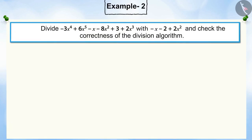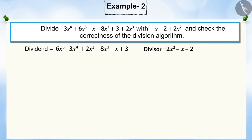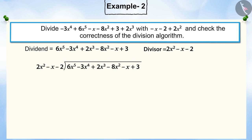Let us see another example. In this question, we will divide the first polynomial by the second polynomial and check the correctness of the division algorithm. You can see that the given dividend and divisor are not in standard form. Before starting the division process, write the polynomials in their standard form, i.e., decreasing order of powers. Now, let's begin the division process.